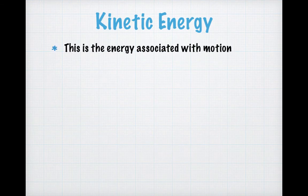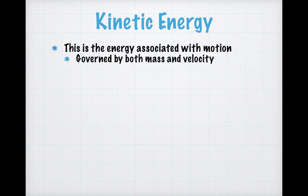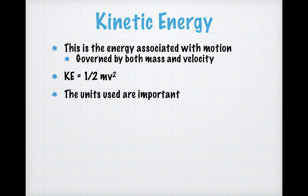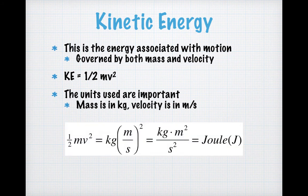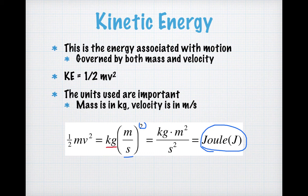Let's take a look at kinetic energy. This is the energy associated with motion, and it's governed by both mass and velocity. Kinetic energy is equal to one-half mv squared. The units are very important: mass must be in kilograms and velocity in meters per second. Working out the units gives us kilograms times meters squared per second squared, which is the SI unit of energy — the joule, written as a capital J.